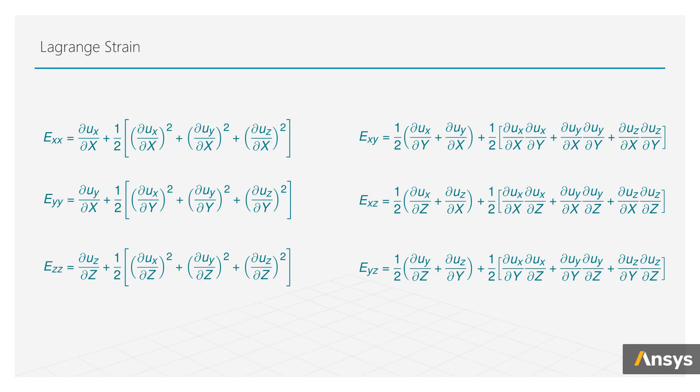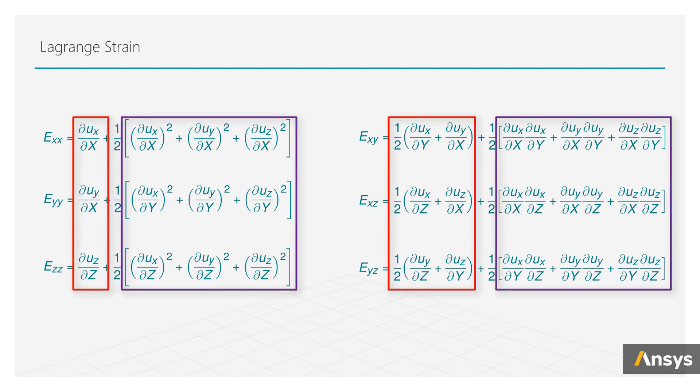If you observe carefully, each component of the strain tensor has a linear and a quadratic component. Now, these relations can be used to distinguish between the large and small deformations.